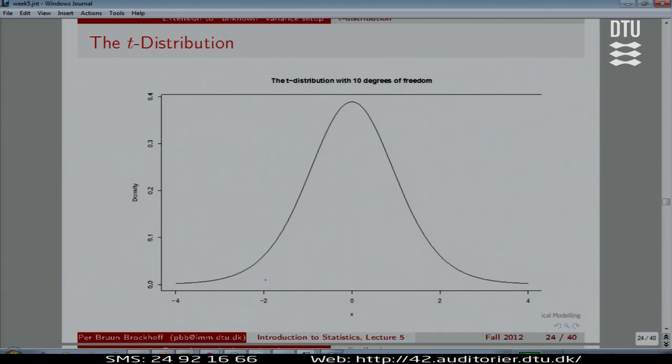Here's the T with 11 number of observations. That is 10 degrees of freedom. Can you see the difference between this and the normal, a major difference?